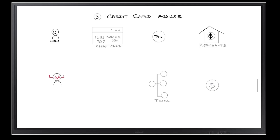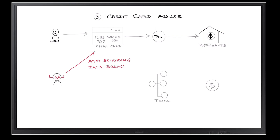Let's talk about the third scenario: credit card abuse. Most e-commerce websites provide a way for legitimate users to transact through credit cards to get relevant services from merchants. But think about a situation where a hacker could get hold of credit card information — either through ATM skimming, which is one approach hackers often follow, or through data breach approaches.